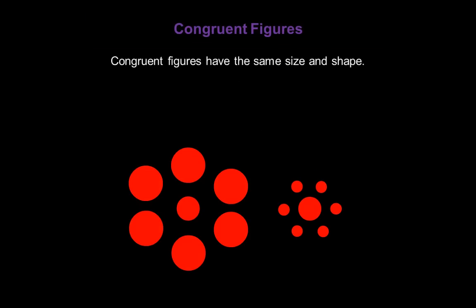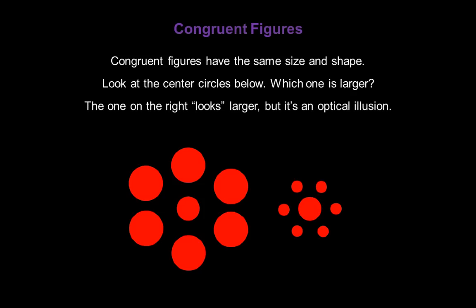Congruent figures have the same size and shape. Look at the center circles below. Which one is larger? Most people believe the one on the right looks larger, but it's an optical illusion. They're both exactly the same size, and I can prove it to you.